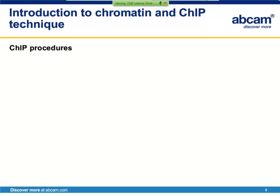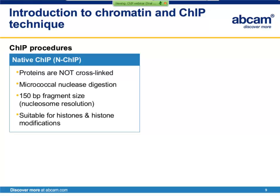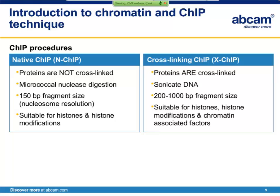There are key differences between the two techniques. In native ChIP, proteins are not cross-linked and native chromatin is the substrate. Fragmentation is achieved by micrococcal nuclease digestion, and using enzymatic digestion it is possible to obtain nucleosome-based resolution of approximately 150 base pairs. Native ChIP is only suitable for proteins stably associated to chromatin, typically limiting this to histones and histone modifications. In cross-linking ChIP, proteins are cross-linked to DNA and formaldehyde is typically used, which is a reversible cross-linker. Chromatin is fragmented by sonication to generate random fragments of between 200 and 1,000 base pairs. As the proteins are cross-linked, histones, histone modifications, and chromatin-associated factors can be analyzed. X-ChIP is standardly used at Abcam during antibody characterization.